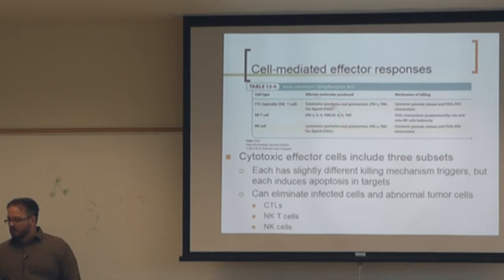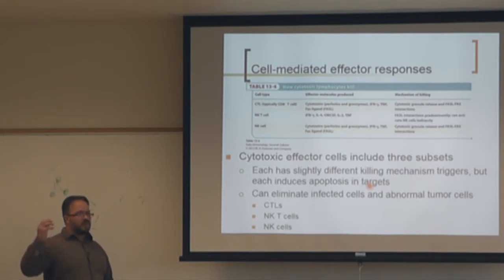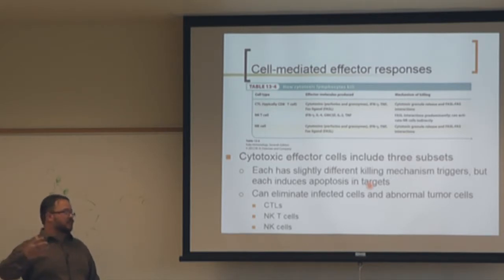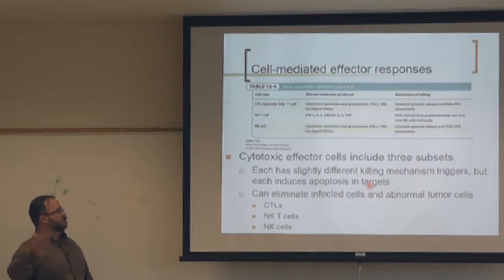The three cytotoxic effector cell subsets each have slightly different killing mechanisms and triggers, but all induce apoptosis. We now understand that rather than directly killing cells, CTLs actually convince the target cell to commit suicide — they induce a strong apoptotic program within those cells.